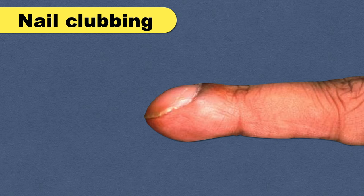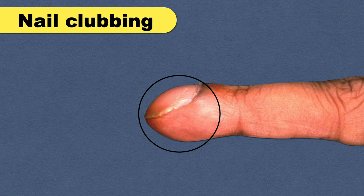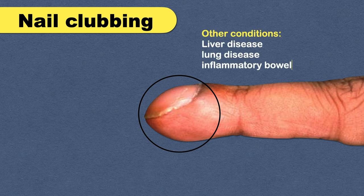Finger clubbing is another important sign of heart disease. Nail clubbing occurs when the tips of your fingers enlarge and the nails curve around the fingertips. It can be associated with many other conditions like liver disease, lung disease, and inflammatory bowel disease.